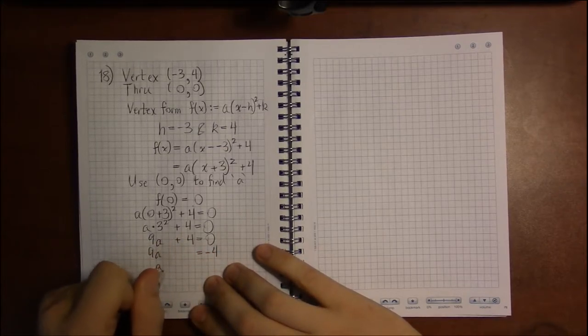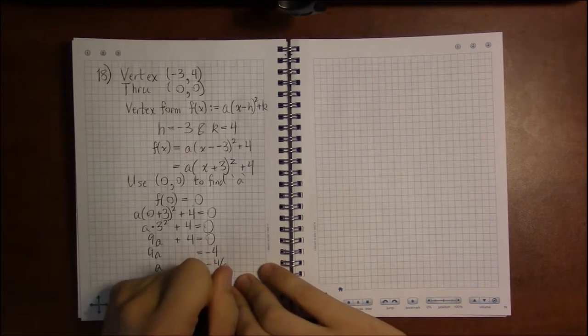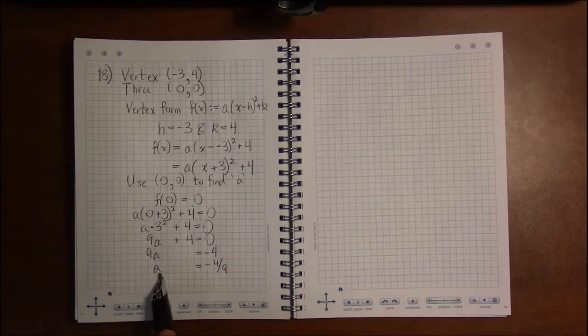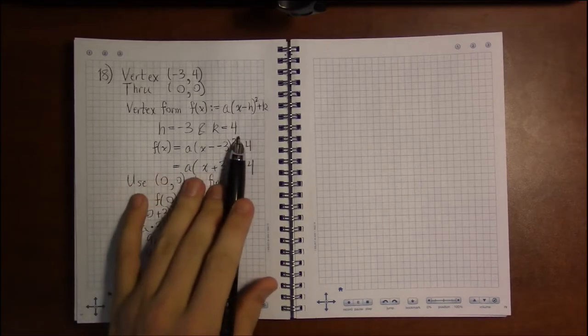Now to solve for a, we need to subtract 4 and divide by 9. So we have -4/9. We now know a. Long ago we figured out h and k.